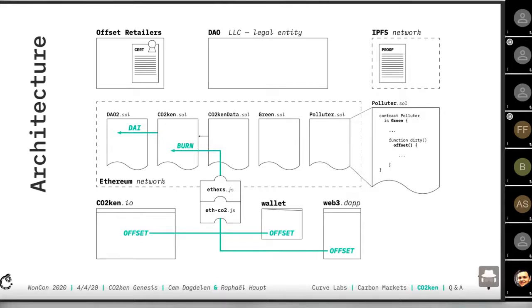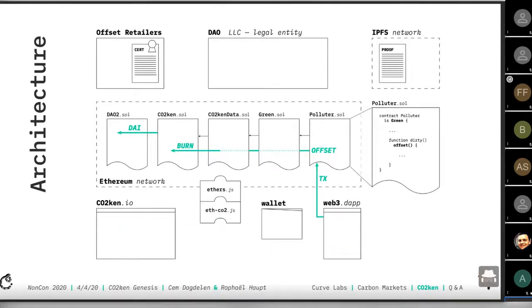The CO2token.io website is the first UI using this library. It works by sending DAI to our CO2 token contract, which then retires or burns an equivalent amount of CO2 tokens — providing reliable proof they cannot be used a second time. And there's the Solidity modifier: any smart contract in the Web3 ecosystem — the 'polluter contract' — can use our offset modifier so that any transaction going through it is automatically offset. We batch these offset transactions together to reduce the impact of our own offsetting computation.